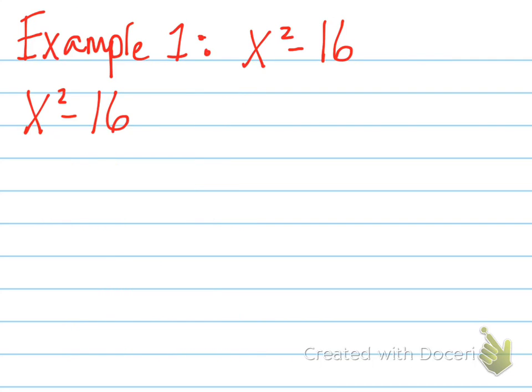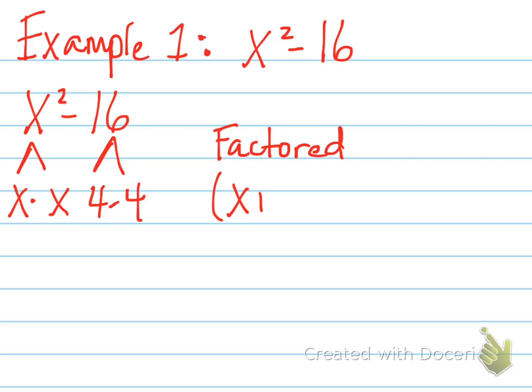Let's look at this first example. x squared minus 16. We have a binomial because there's two terms and we have the difference because there's subtraction. So let's use our difference of squares technique. x times x will give me x squared and 4 times 4 will give me 16. So to factor it out, I'm going to take x plus 4 in parentheses and multiply it by x minus 4 in parentheses.